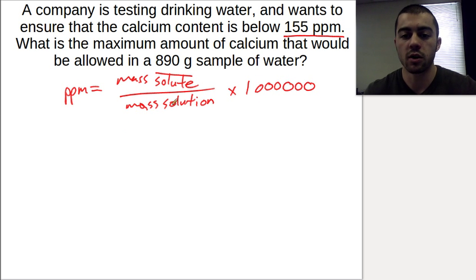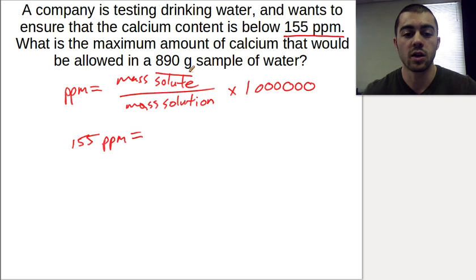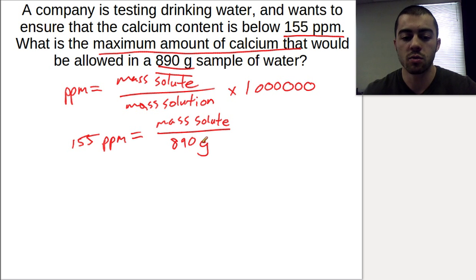Here we have the parts per million: 155 parts per million equals the mass of the solute, and that's what we're looking for. What is the maximum amount of calcium that would be allowed? That's our solute. The mass of the solute is what we're solving for. The mass of the solution is 890 grams. Because we're talking about parts per million on such a small scale, the mass of calcium we're adding is not going to contribute a significant amount to this solution.